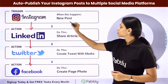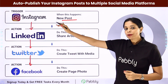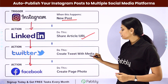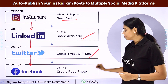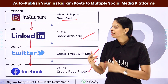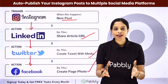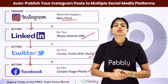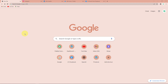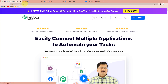Every time a post is created on Instagram, it will automatically be posted on LinkedIn, Twitter, and Facebook group. To understand how you can integrate and automate this entire process, let me take you to my screen. We are first going to type the URL pabbly.com/connect, and here we have reached the landing page of this software.